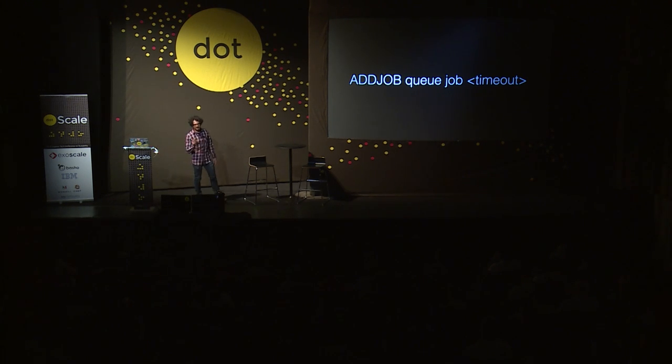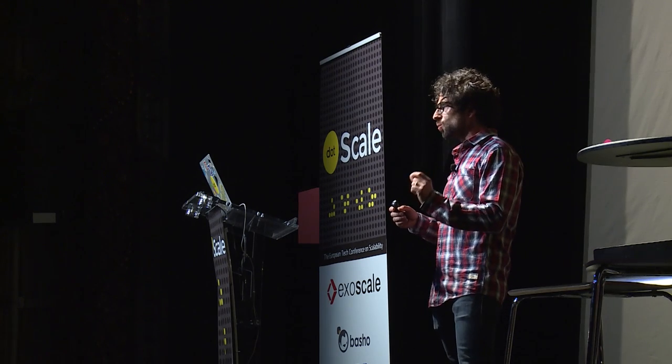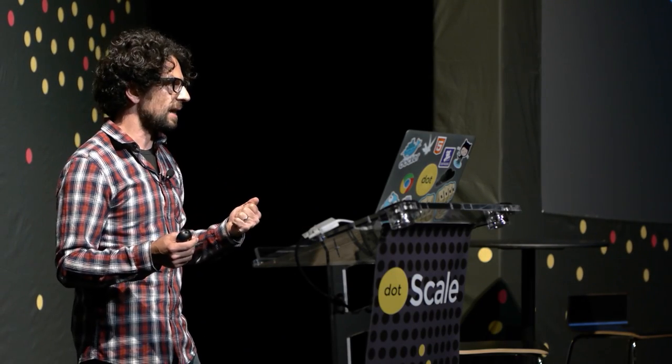We will follow the life of a single message to understand what this queue is, because most message queues look alike from the API. The ADDJOB command is where we create messages. We send this command to the cluster with the name of the queue — there are multiple queues with different names, maybe one for email sending, one for resizing pictures, one for encoding videos — and then the job body, which is just a string. There is also a timeout: if the cluster is not able to materialize the message in time, it returns an error. If you specify a timeout of zero, it will try forever.